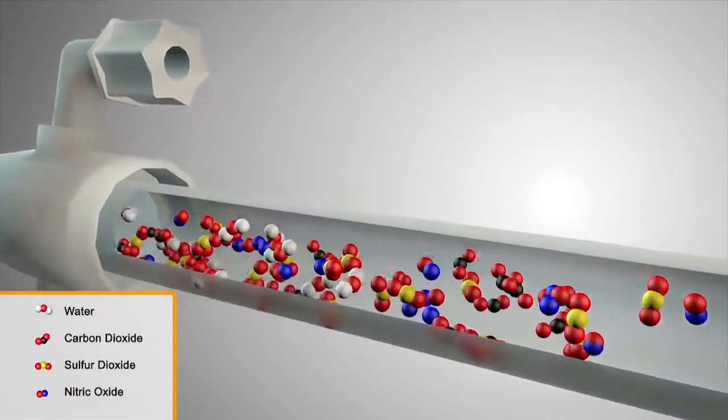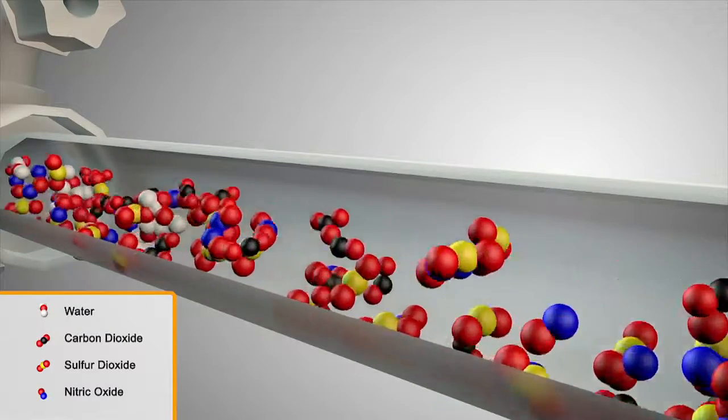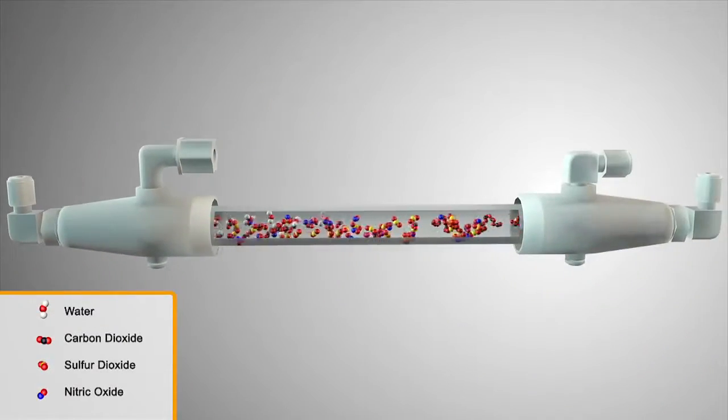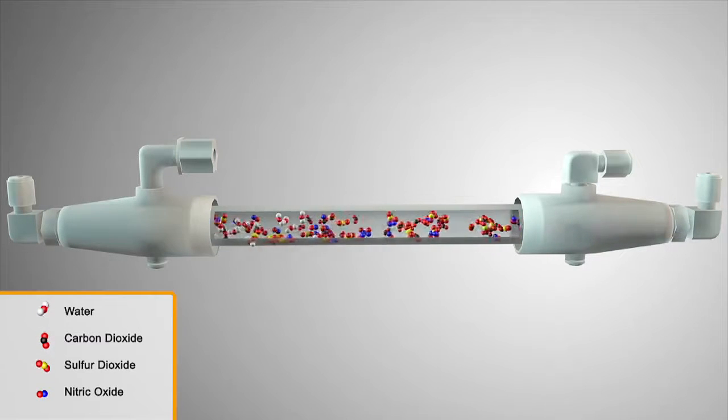The sample is then passed through a membrane dryer where the water is removed by reverse osmosis. You are then left with a dry gas mixture containing sulfur dioxide, nitric oxide, and carbon dioxide.